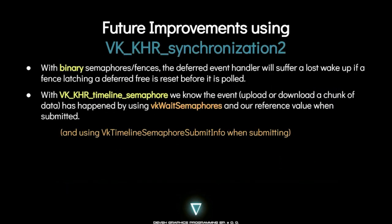One of the issues we currently have with binary semaphores and fences is that the deferred event handler will suffer a lost wake-up if a fence is reset by the user before it is polled — meaning the fence would be in an unsignaled state again and will be interpreted as a copy currently in progress or pending in the near future. With timeline semaphores, we know the event has happened by using VK wait semaphores, which waits for timeline semaphores on the host using a reference value from when we submitted the copy.